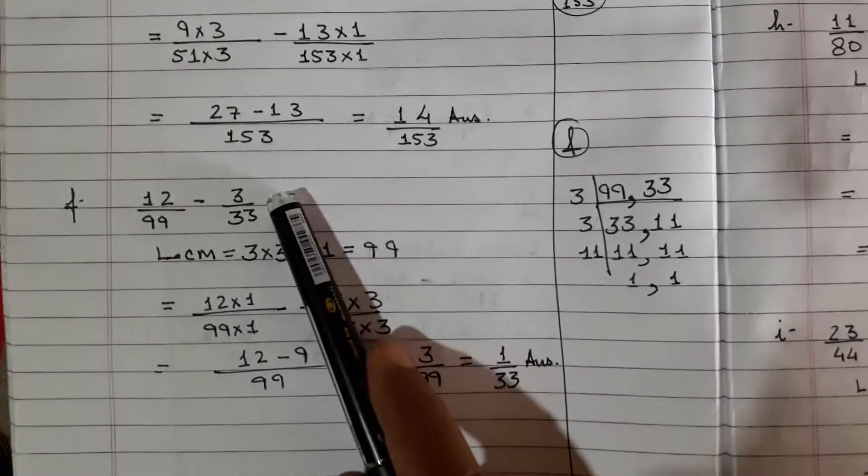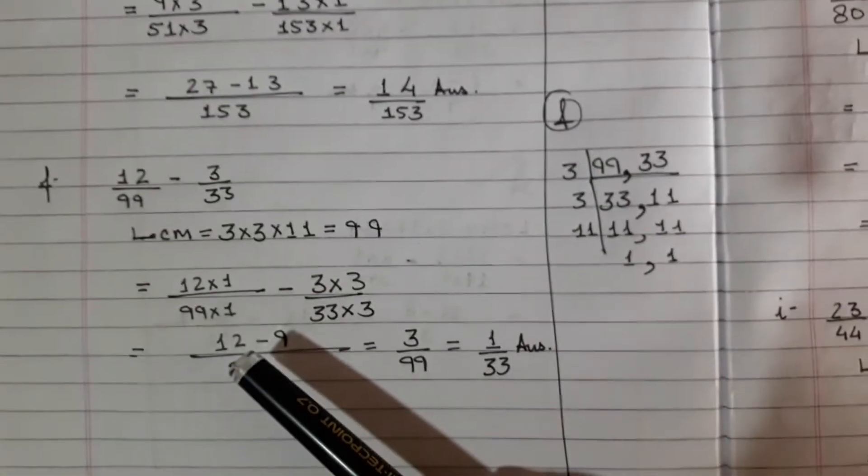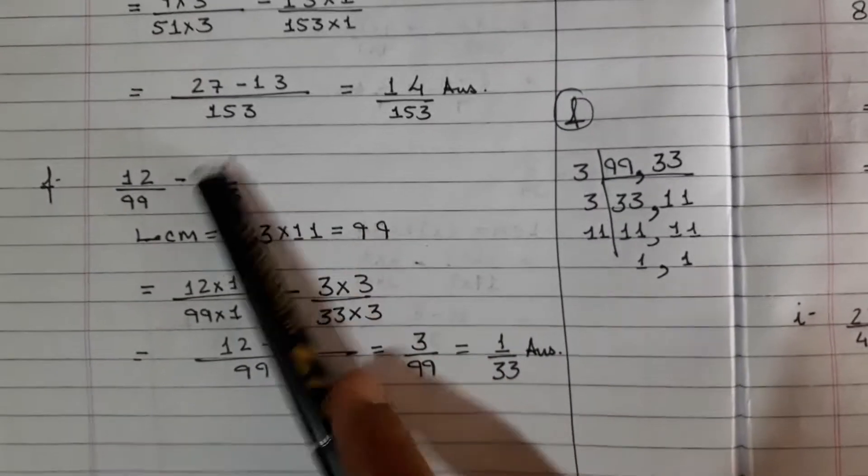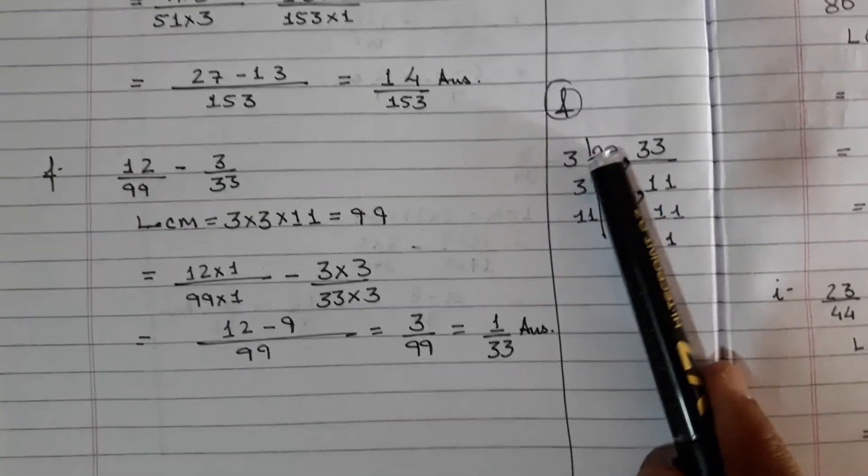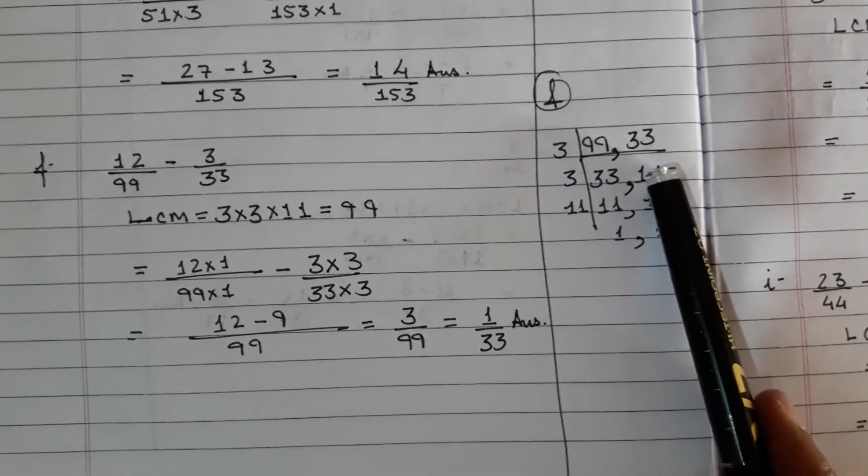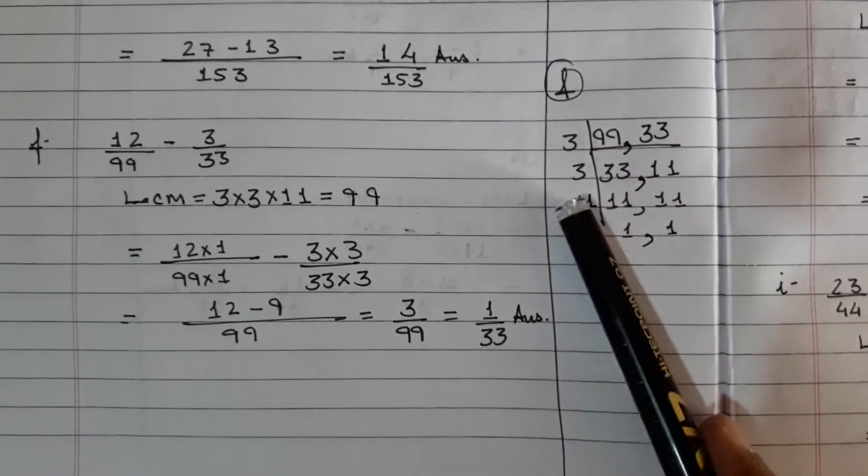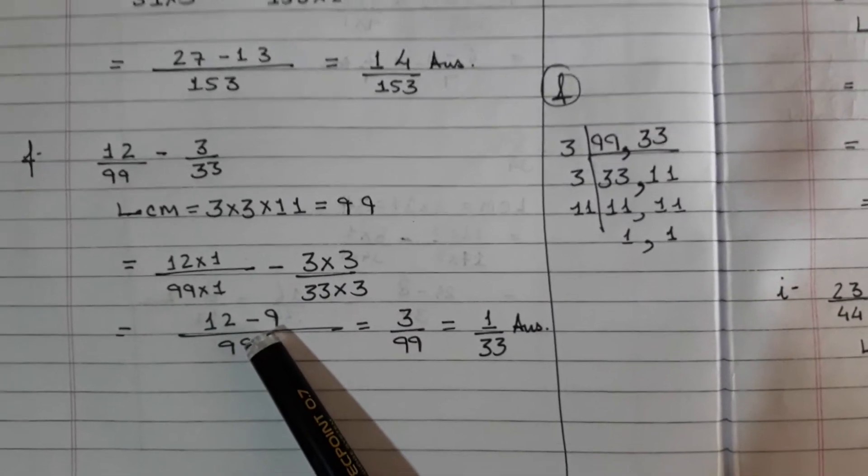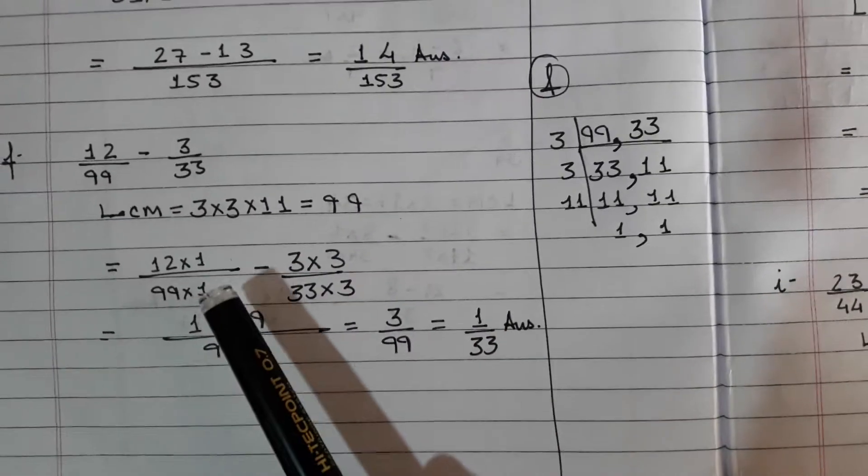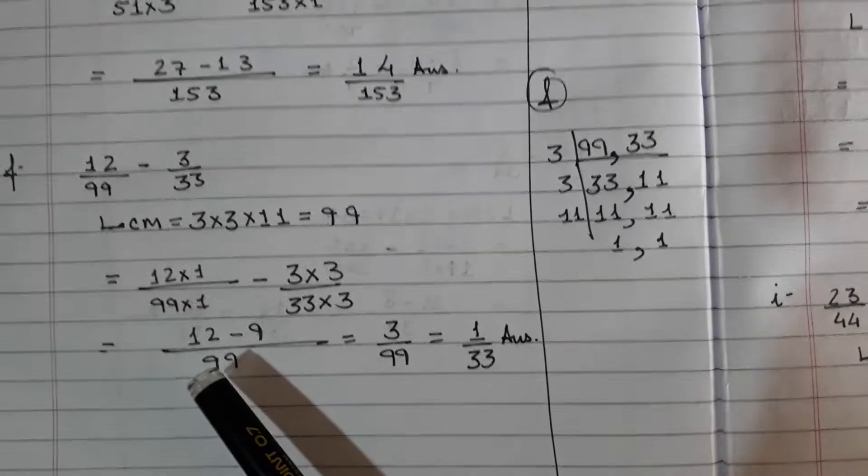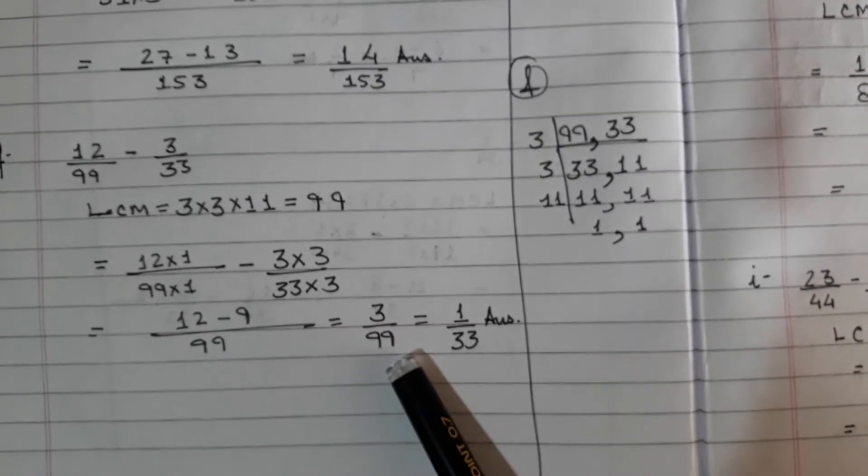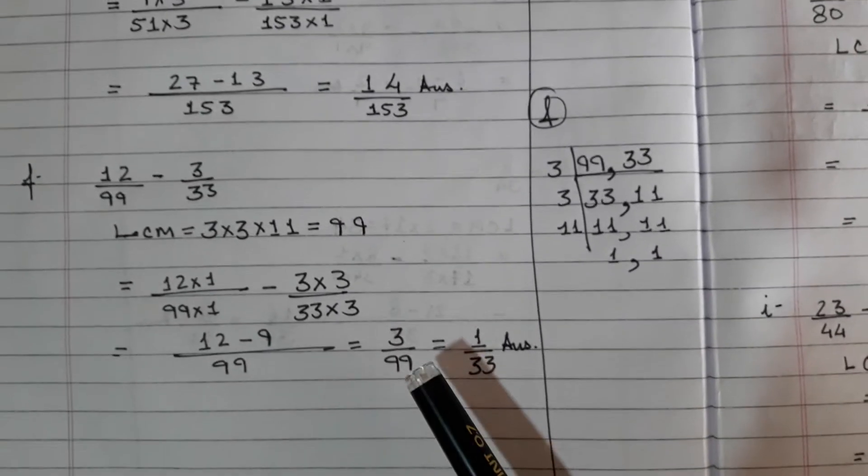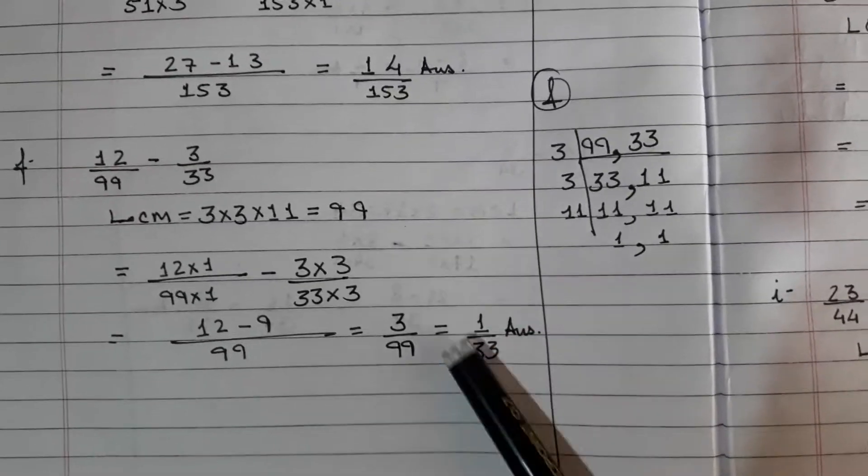12 over 99 minus 3 over 33. I am not reducing them to the smallest fraction here itself. We will continue to do it like this. 99 and 33, 3 can divide them. 3×33 and 3×11 is 33. So 3×3×11, 99 is your LCM. To make it 99, 99×1 and 33×3. So 3×3 and 12×1. 12 minus 9 is 3, 3 over 99. Your answer will be 1 over 33.